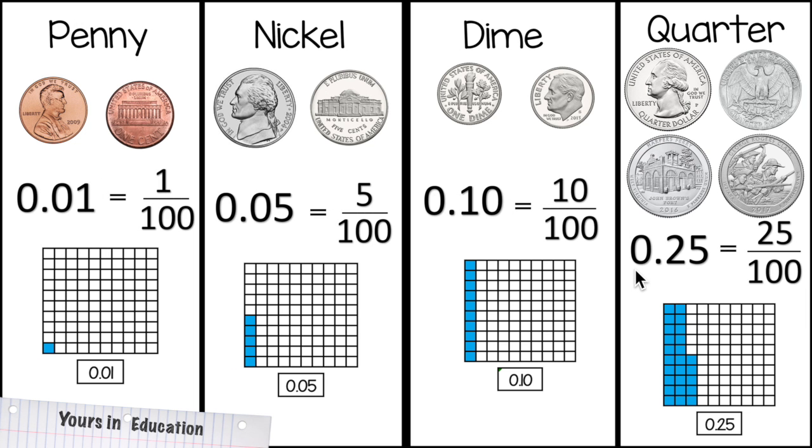How do we write quarter in decimal form is 0.25. You need four quarters to make one dollar, 25, 50, 75, one dollar.